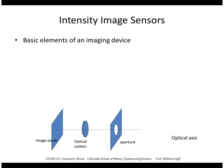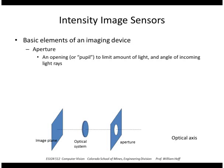So let's look at a typical camera imaging sensor. That consists of the following elements. An aperture, which is an opening or pupil to limit the amount of light entering the system and also the angle of the incoming light rays.